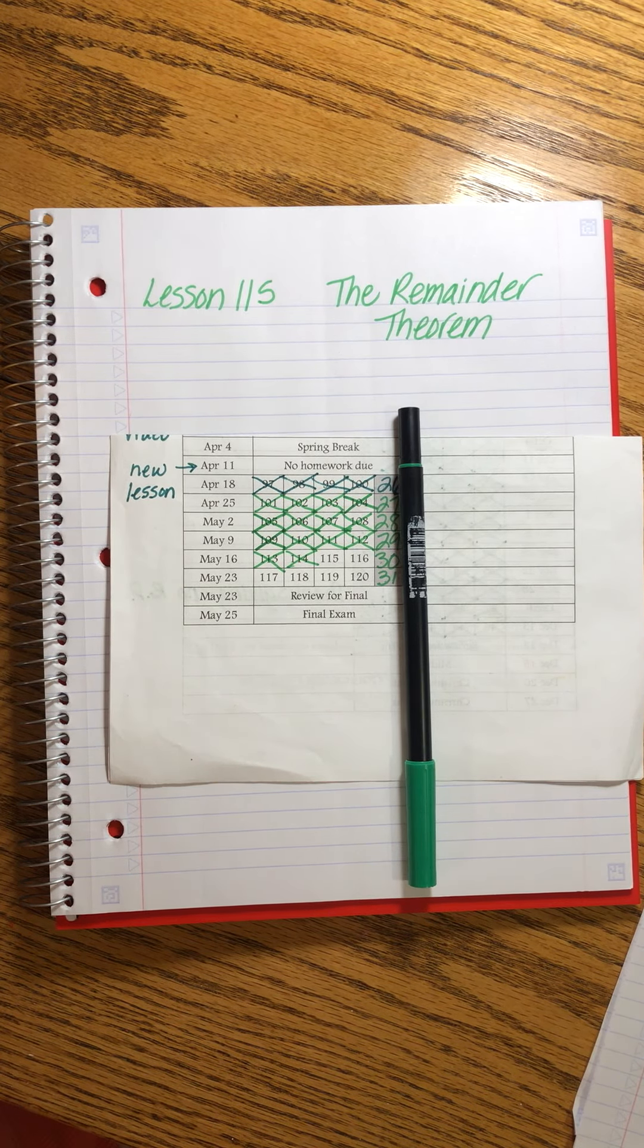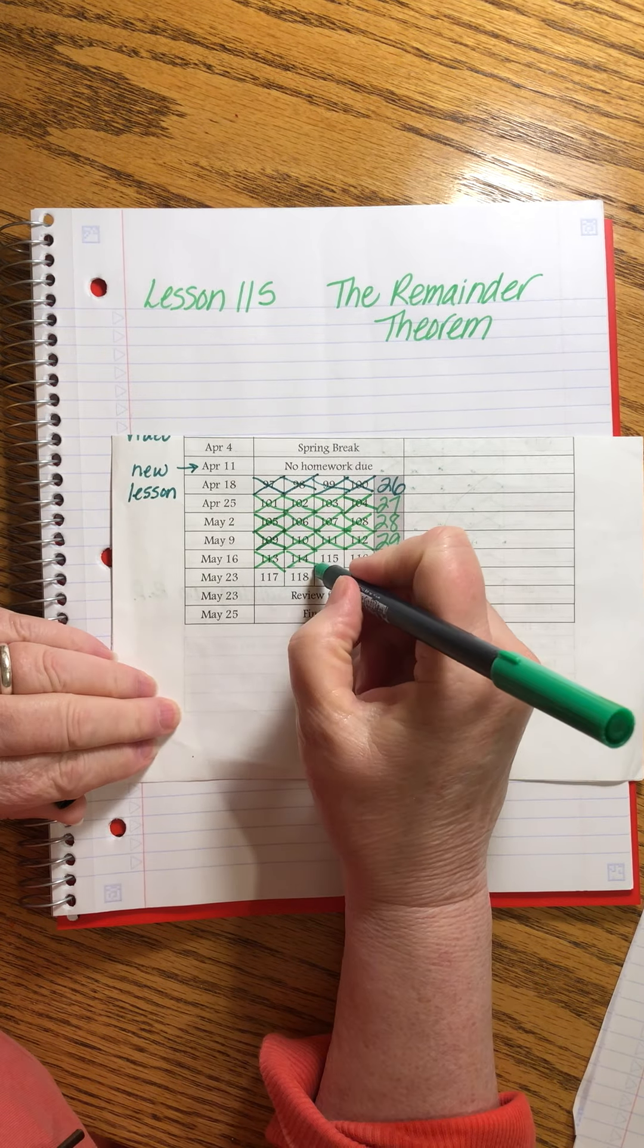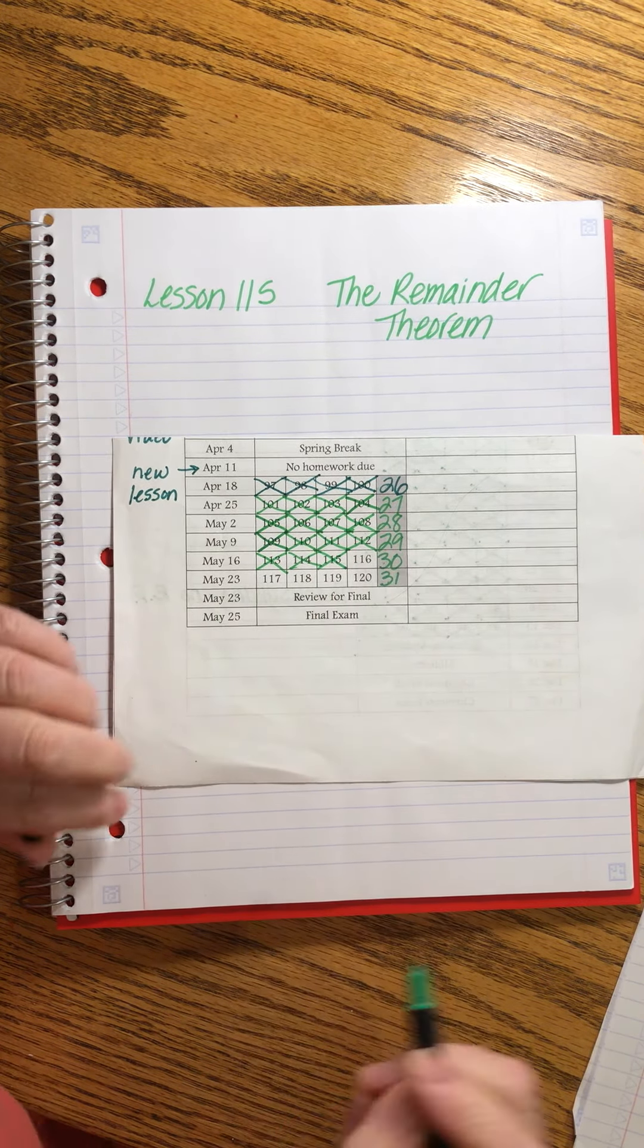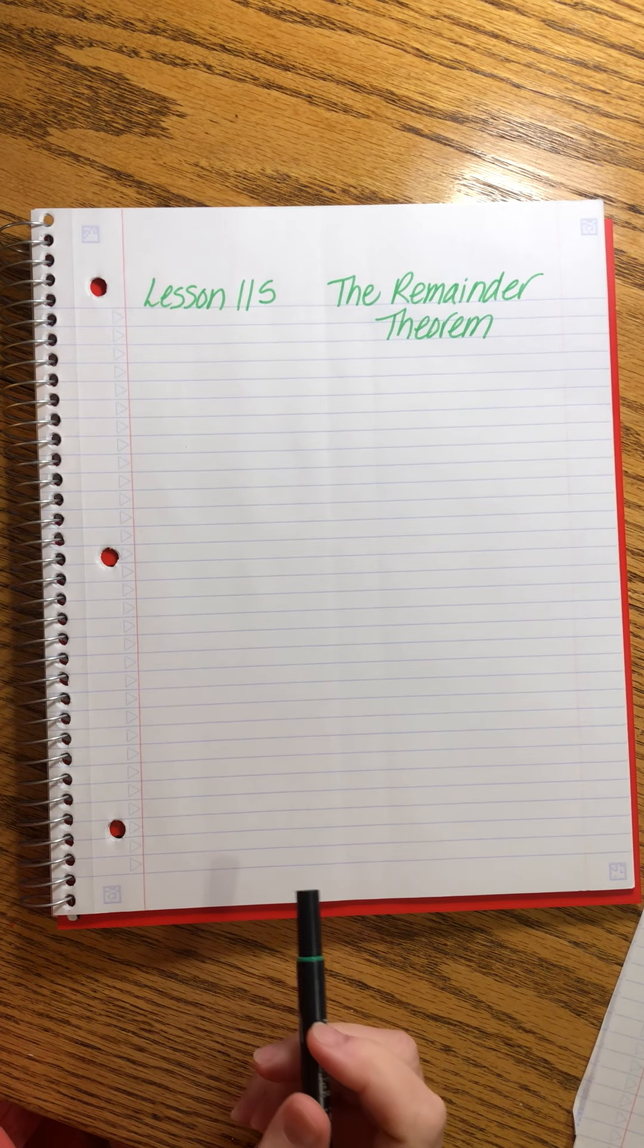Saxon Advanced Mathematics Lesson 115, coming close to the end. This lesson is called the remainder theorem.